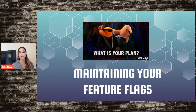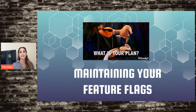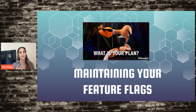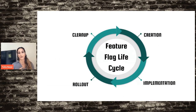Once you have your use cases down, you need to have a maintenance process in place, because it can be overwhelming when you have hundreds of feature flags and no process or plan. Let's look at the feature flag lifecycle. The four stages are: creation, implementation, rollout, and cleanup. We'll go through best practices for each section.